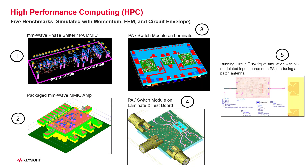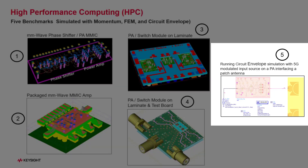Unlike the first four examples which used RFPro EM simulations, example 5 is a circuit simulation example. The input signal is a 5G modulated waveform on a three-stage MIMIC power amplifier at the circuit level, interfacing a patch antenna. This example was simulated with circuit envelope with 100,000 simulation time points.